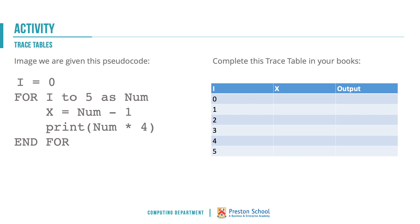It's time for you to give one of these a go. Let's imagine the following pseudocode: i equals 0, for i to 5 as num, x equals num minus 1, print num times 4. Complete the trace table in your book. The i column has been given to you and for each instance of i you need to complete what's the value of x going to be and what's going to be output from this program. Pause the video at this point and complete that trace table in your book.